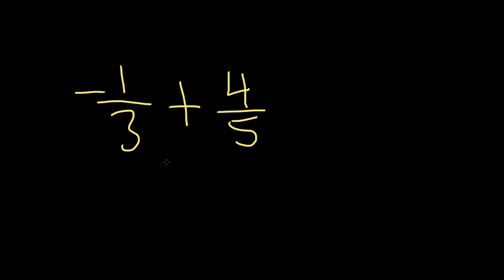So the first step is to find what's called a common denominator. To find the common denominator you can multiply the bottom pieces. These are called the denominators. So 3 times 5, that's going to be equal to 15. So that's your common denominator.